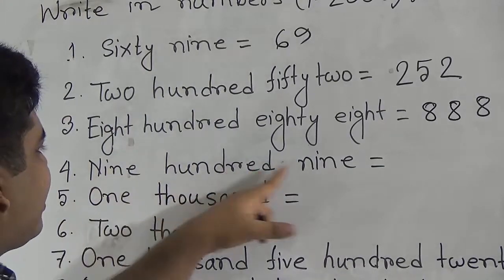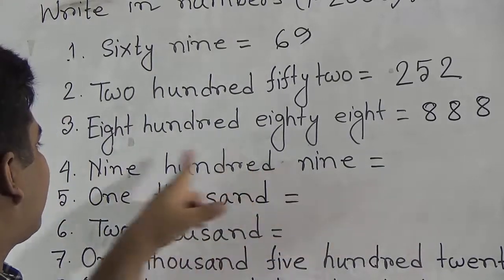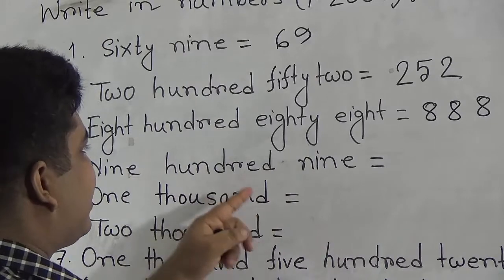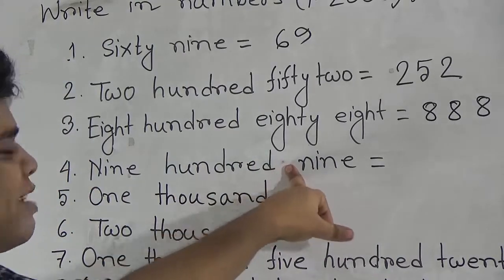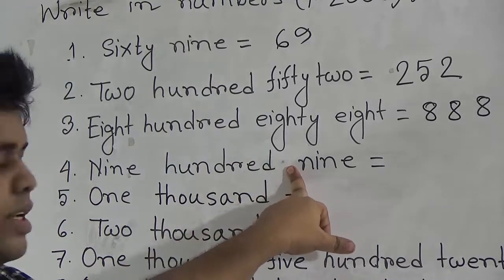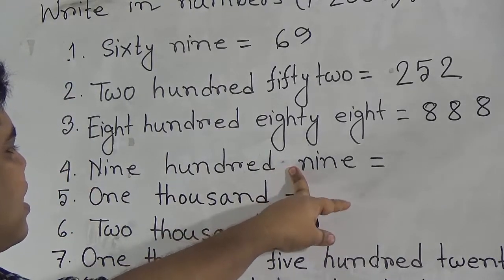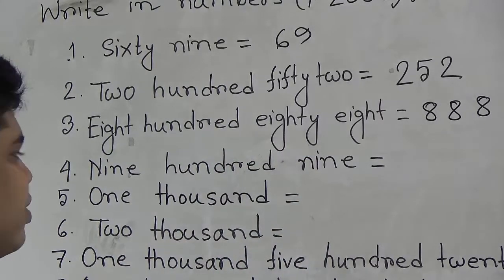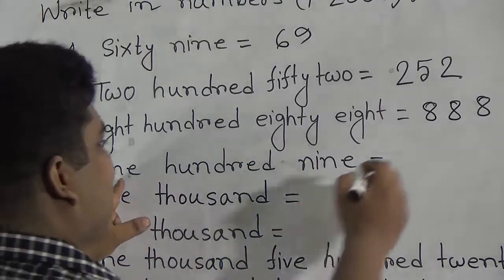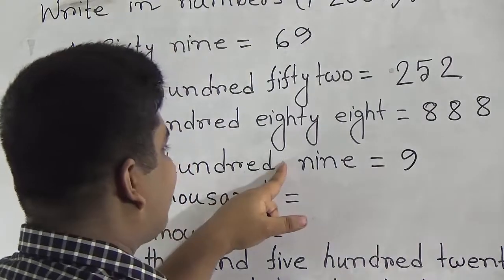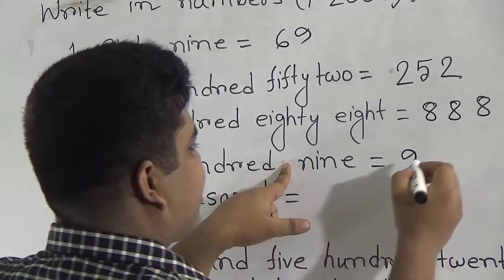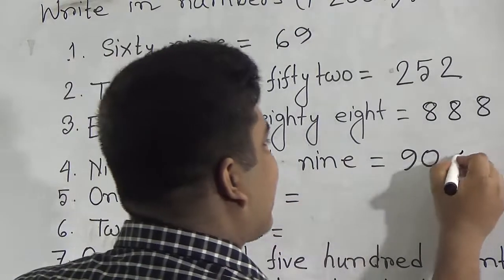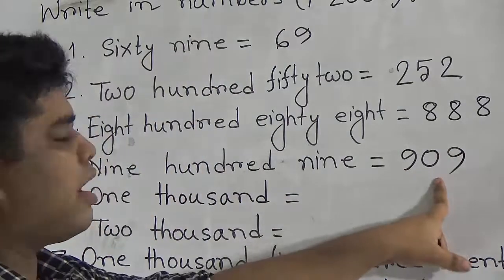Our next number is 909. Students, notice the ones place number is absent. If any place is absent, then that place must be 0. That means 900, and tens place is absent so we write 0, and ones place is 9, so we write 909.